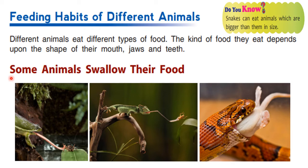If you see some animals, they swallow their food, some animals chew their food, some animals tear their food, and some animals suck their food. Now let us see about some animals that swallow their food — for example, frogs.